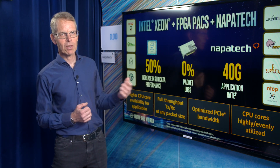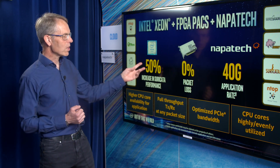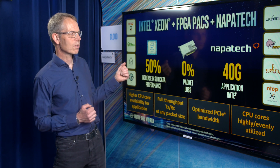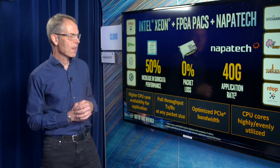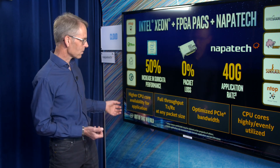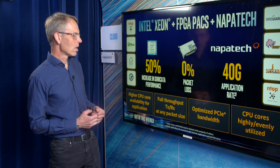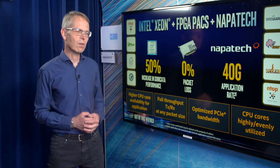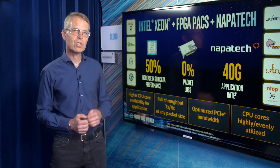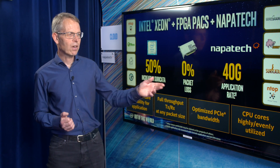Now we have run the demonstration and what you can see is we have zero packet loss, which is a key value for these applications. We have increased the performance of Suricata by 550 percent and we can do it at line rate 40Gbps. The key values delivering these benefits include higher CPU core availability for the application, guaranteed full throughput for receive and transmit, optimized PCI usage, and very even load distribution across CPU cores.